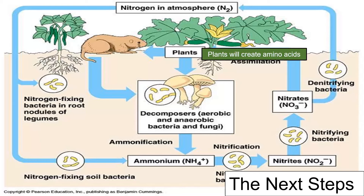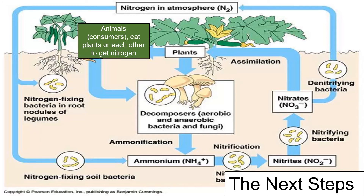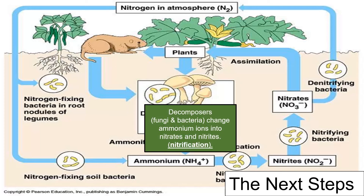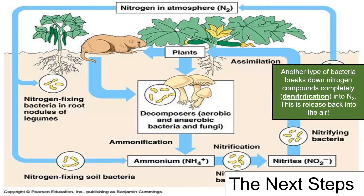Amino acids are then accessed when animals or consumers eat those plants or each other to get nitrogen. The nitrogen is returned when plants and animals die or from waste, releasing ammonium. Decomposers — fungi and bacteria — change ammonium ions into nitrates and nitrites; this is nitrification. Another type of bacteria breaks down nitrogen completely through denitrification into N₂, or free nitrogen, which is released back into the air.